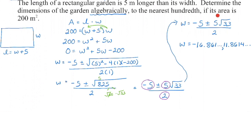I know that whatever the width is, my length is five meters longer. Because we're given the area, I know the area of a rectangle is length times width. When you substitute the area in, do not include the units — an extra variable sometimes confuses people. I put in 200 for the area, my length is w plus five, my width is w. I'm going to get rid of the brackets by distributing w in, and I recognize this is a quadratic because of that degree two.